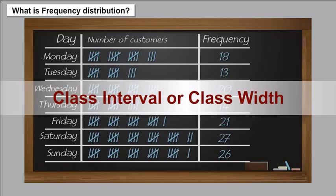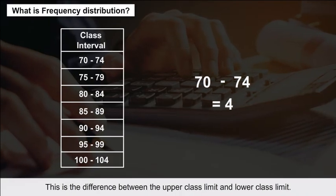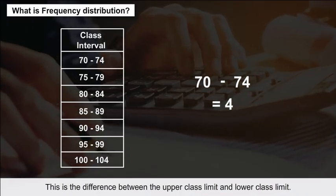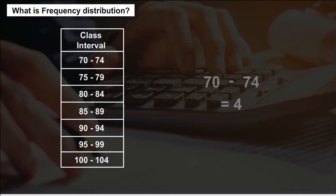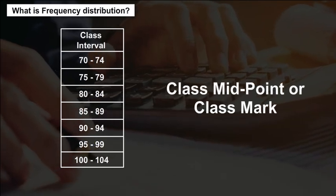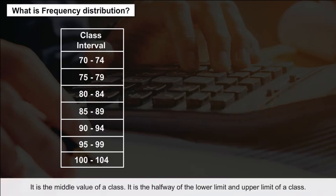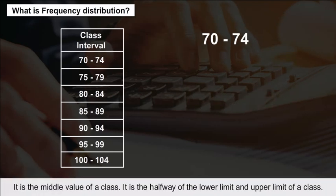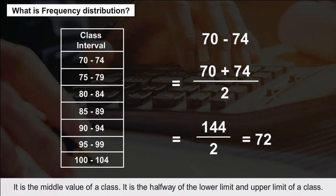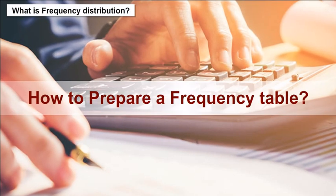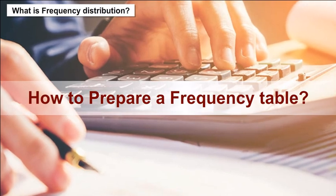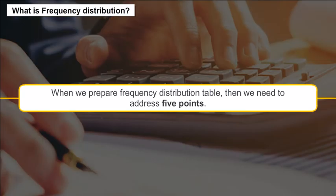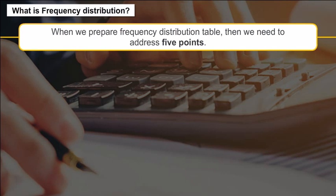Class interval or class width is the difference between the upper class limit and the lower class limit. Class midpoint or class mark is the middle value of a class — it is halfway between the lower limit and upper limit of a class.